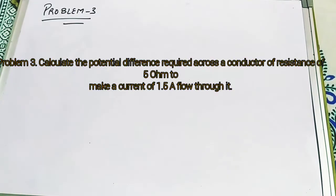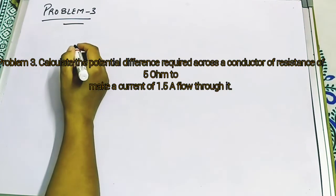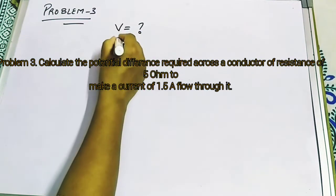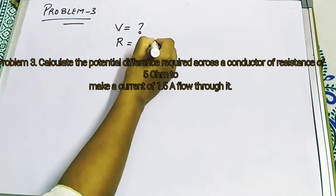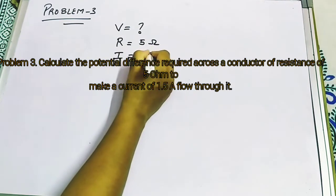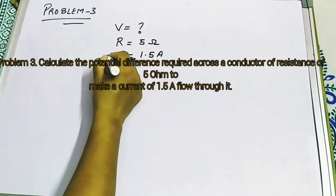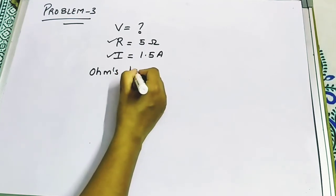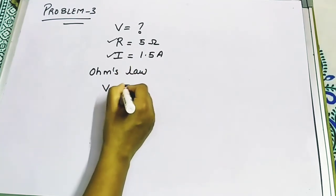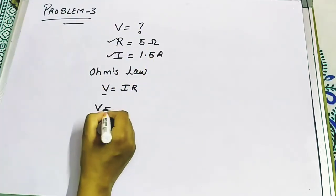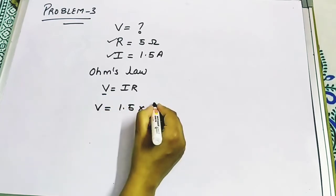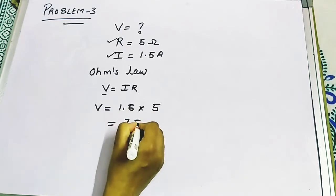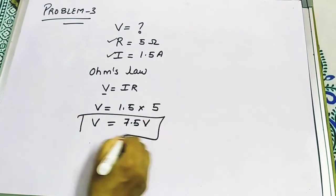Problem 3: Calculate the potential difference required across a conductor of resistance 5 Ohm to make a current of 1.5 amperes flow through it. We have the value of current and resistance, so we use Ohm's law: V equals IR. V equals 1.5 into 5, which gives 7.5 volt. So 7.5 volt is the answer for the potential difference.